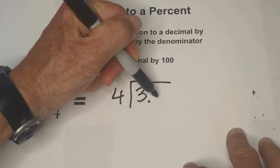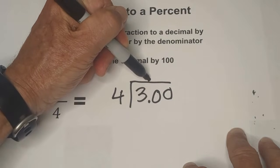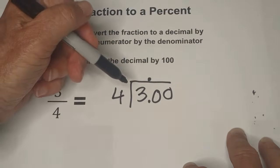Four is greater than three. So let's put a decimal there and some zeros and I'm going to bring the decimal up. Four is larger than three.